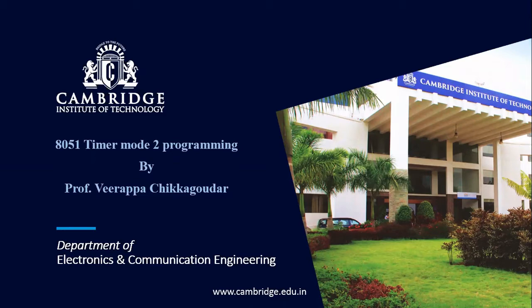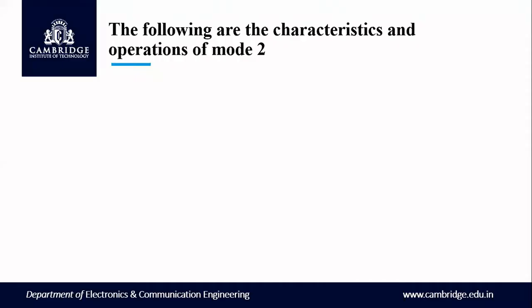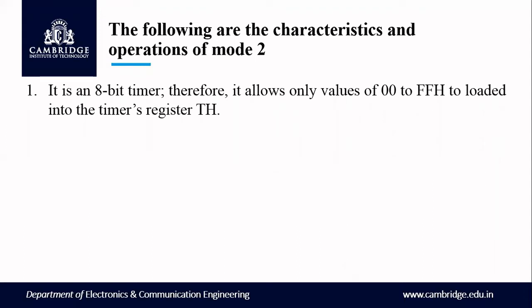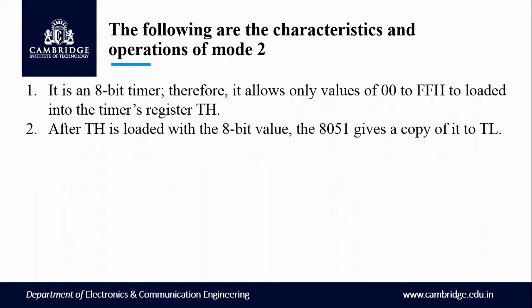Let us see the objectives of mode 2 operation — the characteristics and operations of mode 2. It is an 8-bit timer, so mode 2 allows only values of 00H to FFH to be loaded into the timer's TH register. The initial value loaded into TH achieves a total of 256 rounds in this mode. After TH is loaded with an 8-bit value, the 8051 will copy that value into TL register. So in mode 2, whatever value you load into TH, a copy is loaded into TL, and TL will start counting — not TH.